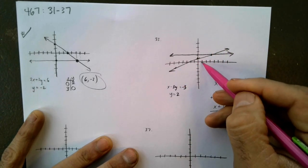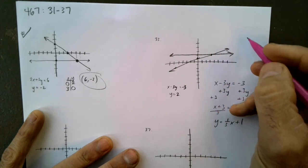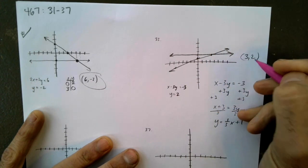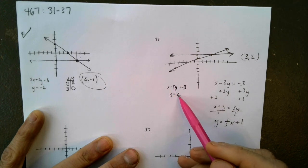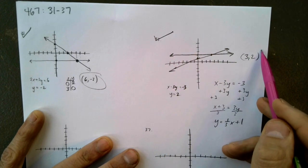So, the point of intersection is 1, 2, 3, 1, 2, 3, 2. I'm still going to plug it in. You know I'm going to. 3 minus 6 is negative 3. And of course, y equals 2. Check. 33 works. All right, let's jump to 35.